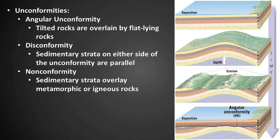What is an unconformity? An unconformity is a buried erosional or non-depositional surface separating two rock masses or strata of different ages, indicating that sediment deposition was not continuous. There are three main types of unconformities. An angular unconformity is where tilted rocks are overlaid by flat-lying rocks. A disconformity is where the sedimentary strata on either side of the unconformity are parallel to each other. A nonconformity is where sedimentary strata overlie metamorphic or igneous rock.